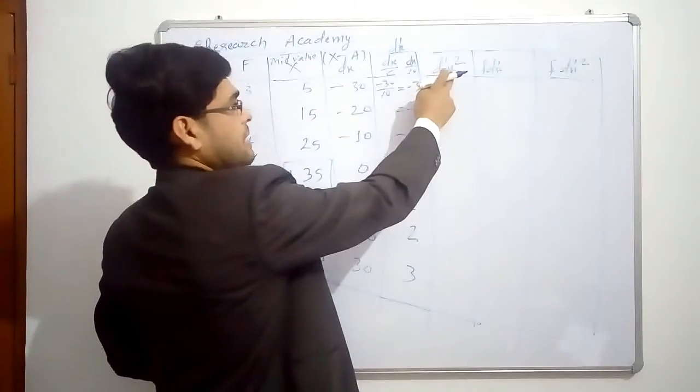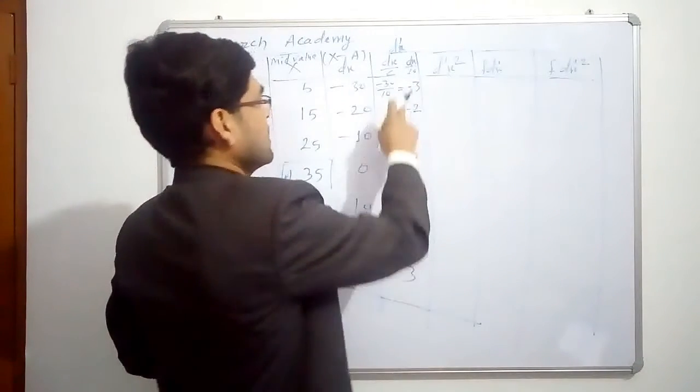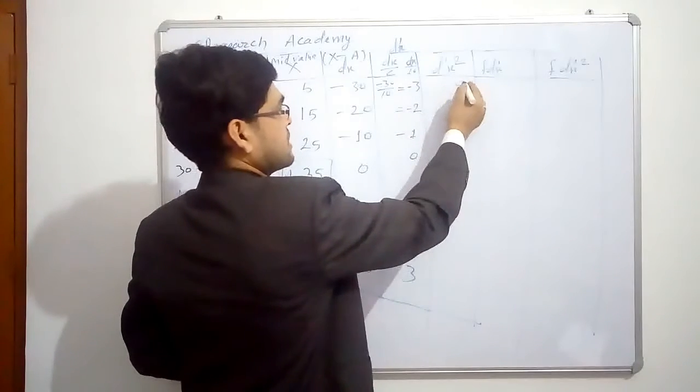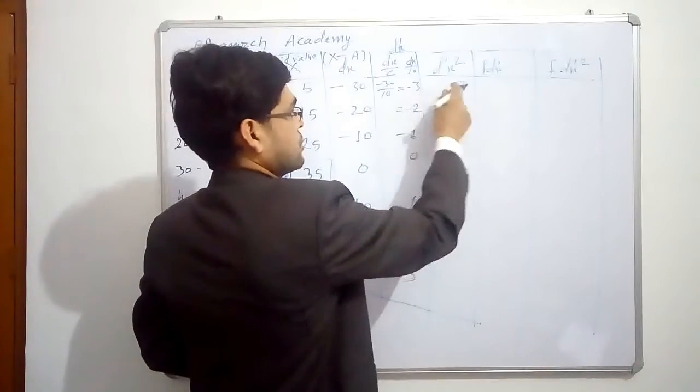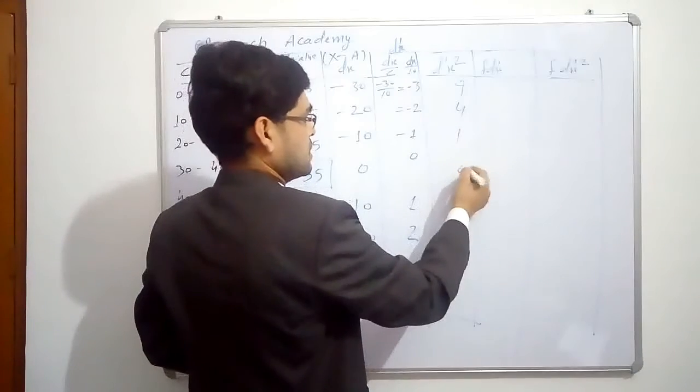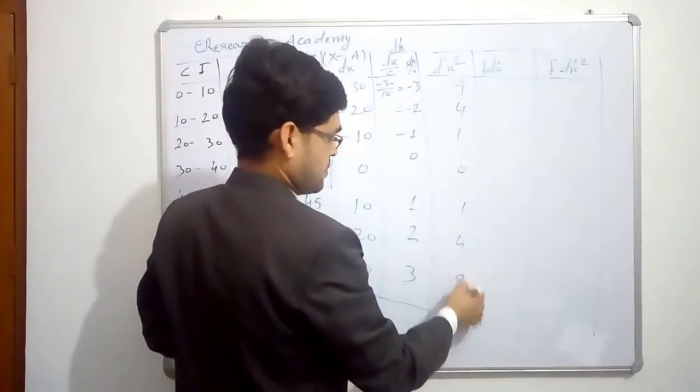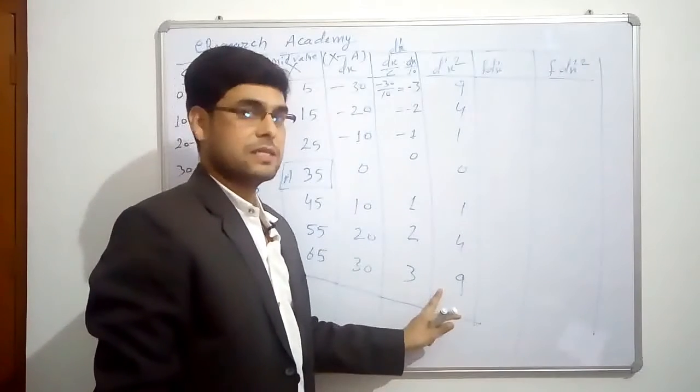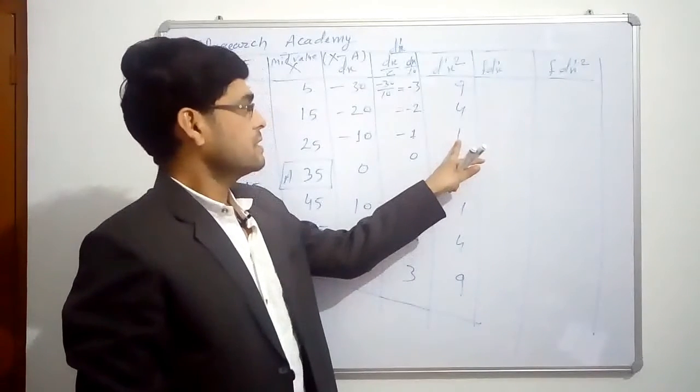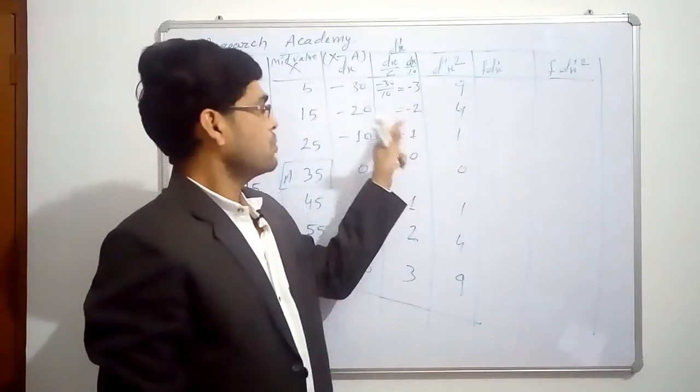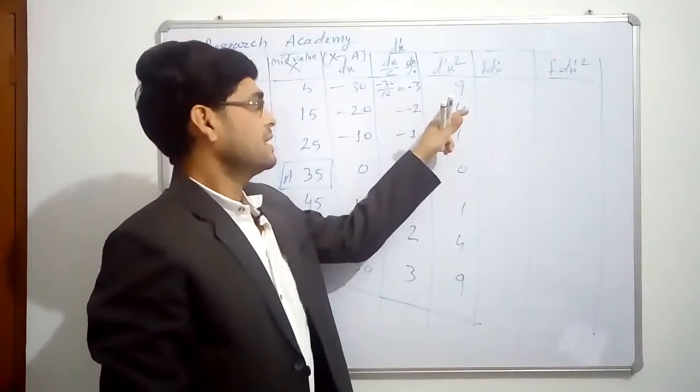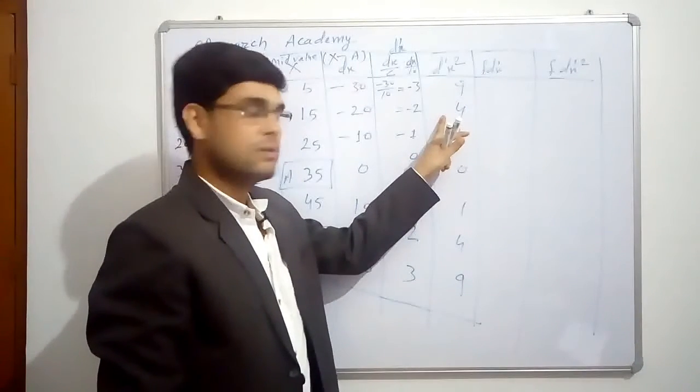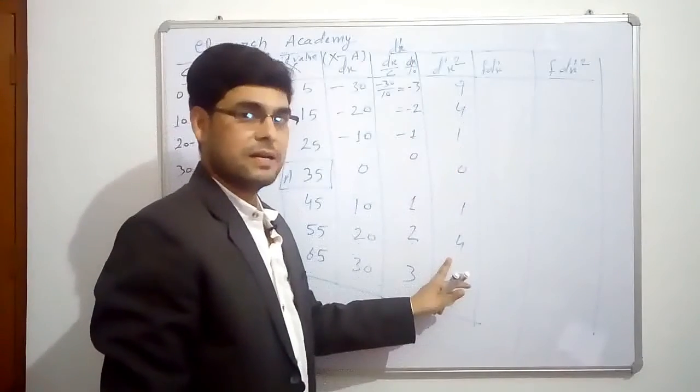So let's find the value of d-x dash square. So 3 into 3. Minus into minus, this is plus 9. 3 into 3, 9. 2 into 2, 4, 1, 0, 1, 4, 9. As I mentioned, this is just a simplification of our calculation. When we were calculating this same question by direct or shortcut method, the calculation was quite tedious or tough. So it becomes easier here, or simple here.